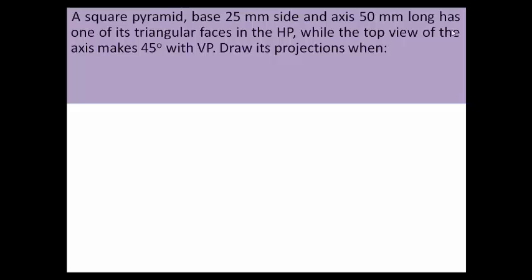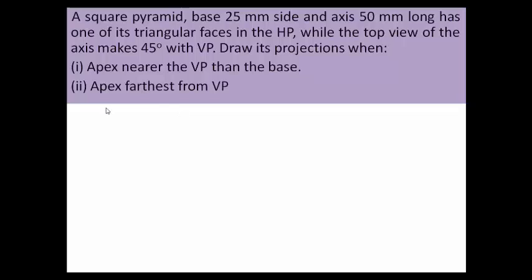A square pyramid with base 25 mm side and axis 50 mm long has one of its triangular faces in the HP, while the top view of the axis makes a 45-degree angle with the VP. The two conditions are: apex nearer the VP than the base, and apex farthest from the VP.